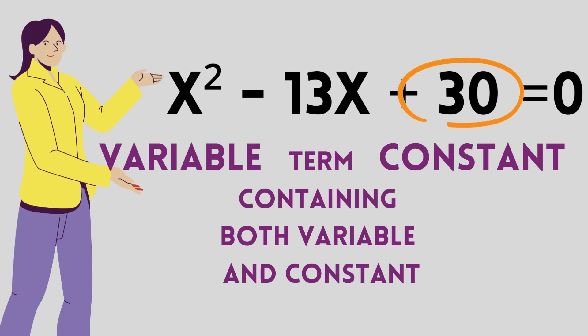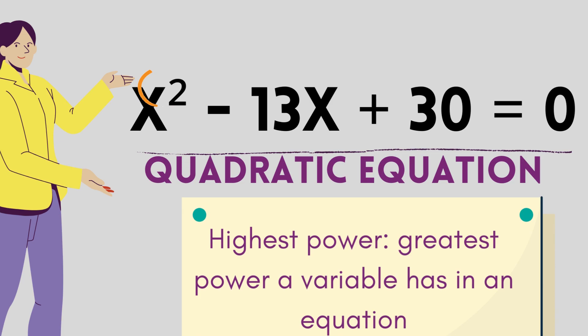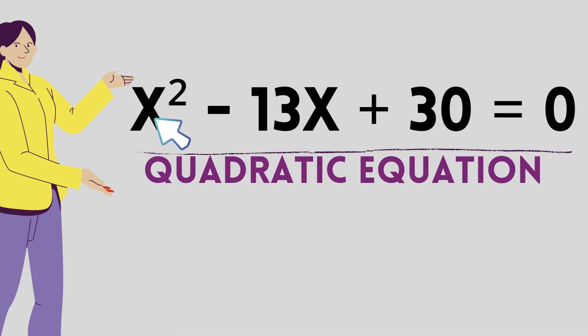Now let us go a step higher. Here you can see in the equation the highest power of the variable is 2. By highest power, I mean the greatest power that a variable has in an equation. Here, the variable is x and in the first term, that is x square, the power is 2.